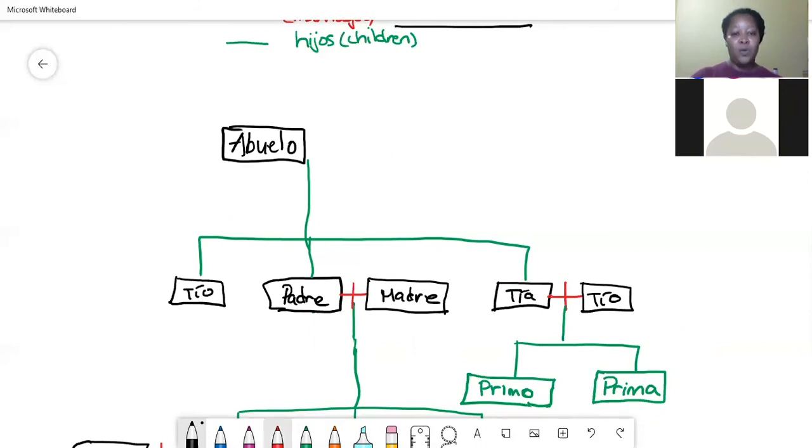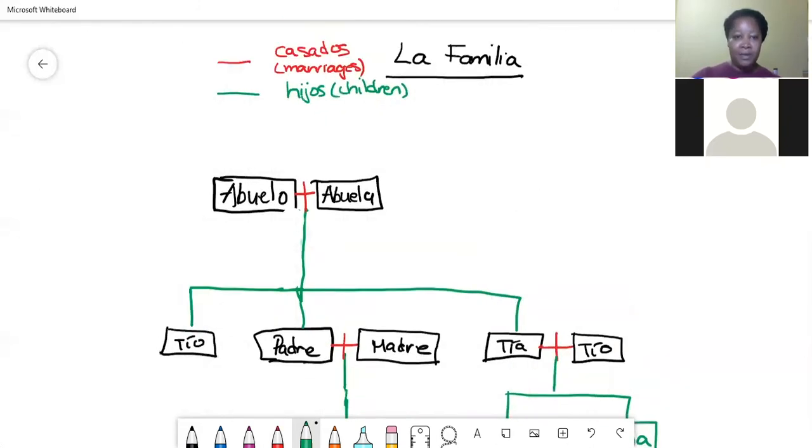Your abuelo married your abuela. And your abuelo and your abuela produced your padre who married your madre and produced you and your hermanos.